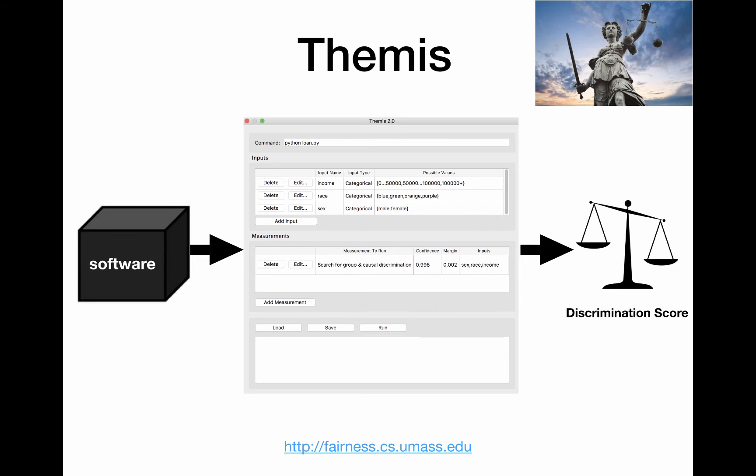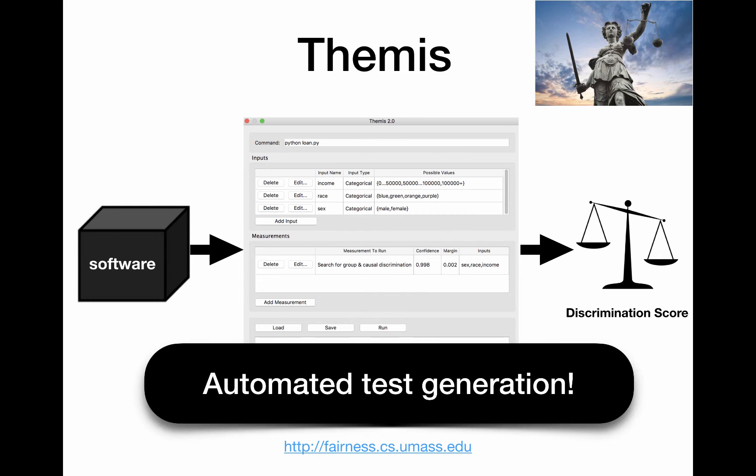Causal discrimination measures how often the decision is different between the green and purple applicants. To help developers test for discrimination, we built an automated software testing tool, Themis. Themis automatically generates test suites to detect and measure group and causal discrimination. Currently, Themis works on software with categorical inputs, such as race, and produces binary outputs, such as approved or denied.